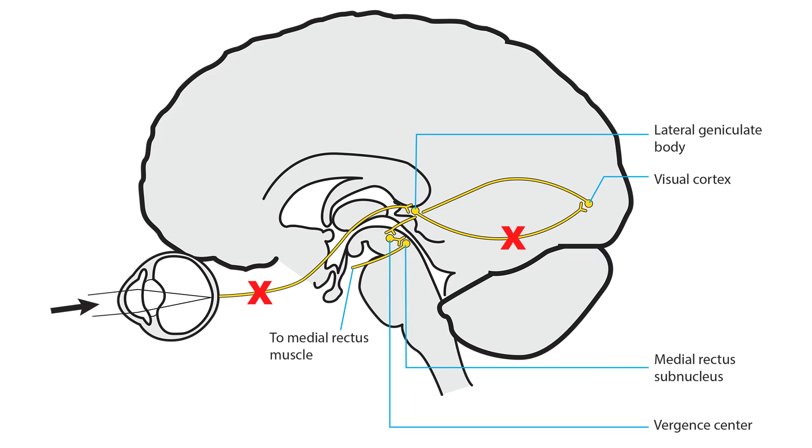Overaction leads to esotropia. Underaction leads to exotropia. Eye movements will be of normal amplitude in all directions.